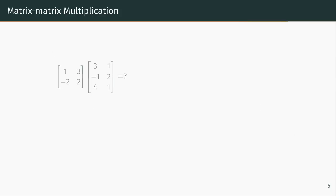What about this matrix product? The first matrix is a 2×2 matrix and the second matrix is a 3×2 matrix. Unfortunately, the number of columns of the first matrix does not equal the number of rows of the second matrix, so these two matrices cannot be multiplied.